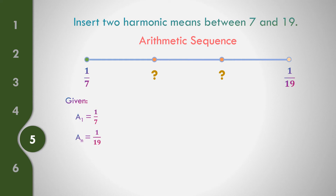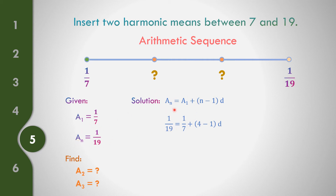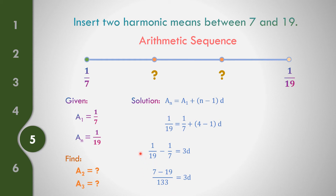The first term is 1/7 and the last term is 1/19. Using a_n = a_1 + (n − 1)d, with n = 4 terms: 1/19 = 1/7 + (4 − 1)d. Transposing: 1/19 − 1/7 = 3d. The LCD of 19 and 7 is 133. So (7 − 19)/133 = 3d, giving −12/133 = 3d. Dividing both sides by 3, the common difference d = −4/133.